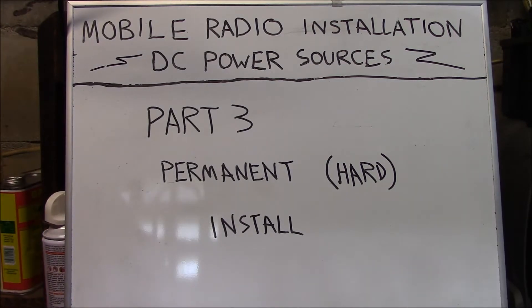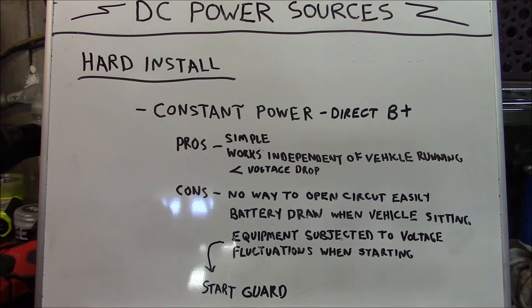Let's get cracking and on to the subject matter. The first example we're going to study is the constant power example which is basically hooking the equipment directly to battery positive and directly to ground. The pros of it are it's simple and your equipment will work independent of the vehicle running.